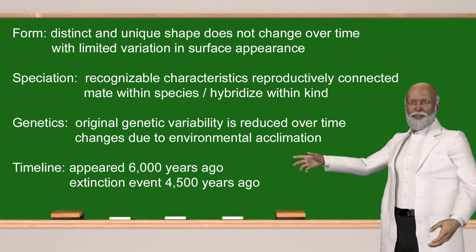In summary, the major elements of a scientific model of created kinds include: first, a distinct and unique form that does not change over time, along with a limited amount of variation in surface appearance. Second, species that are recognizable because of reproductively connected characteristics, which are able to mate with others of the same species and potentially hybridize with others of the same kind. Third, a broad genetic variability existed in the original kinds, and this variability is reduced as time passes because of speciation and environmental acclimation. Fourth, an expected appearance of kinds approximately 6,000 years ago with an aquatic extinction event 4,500 years ago.